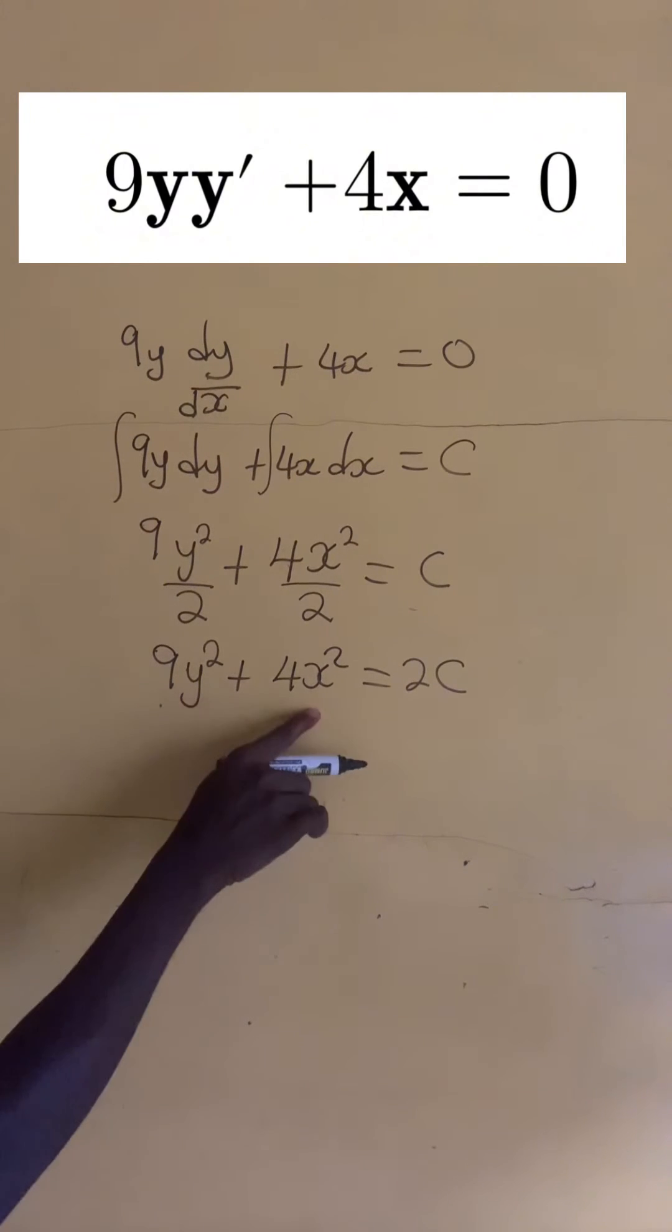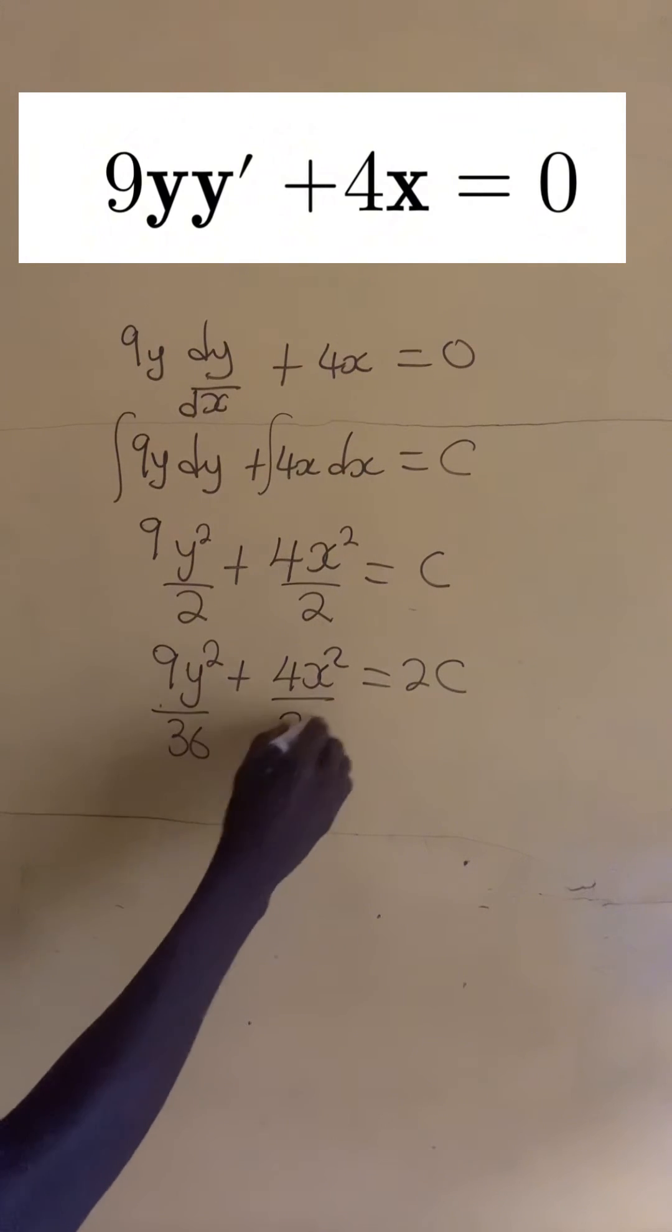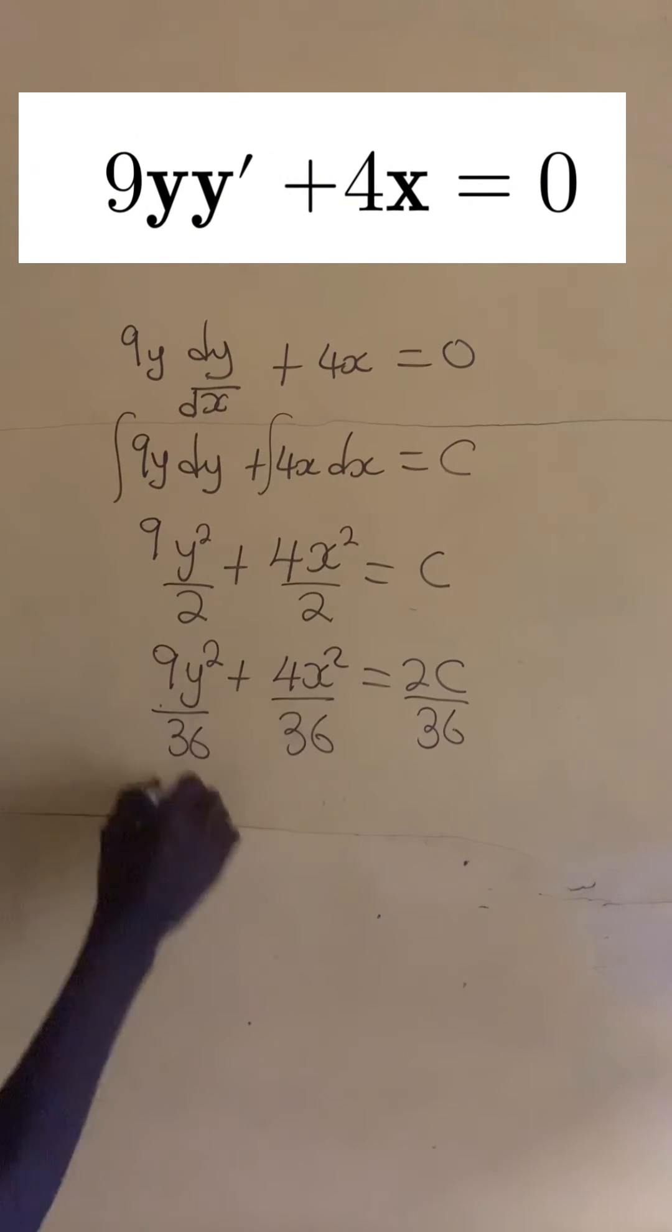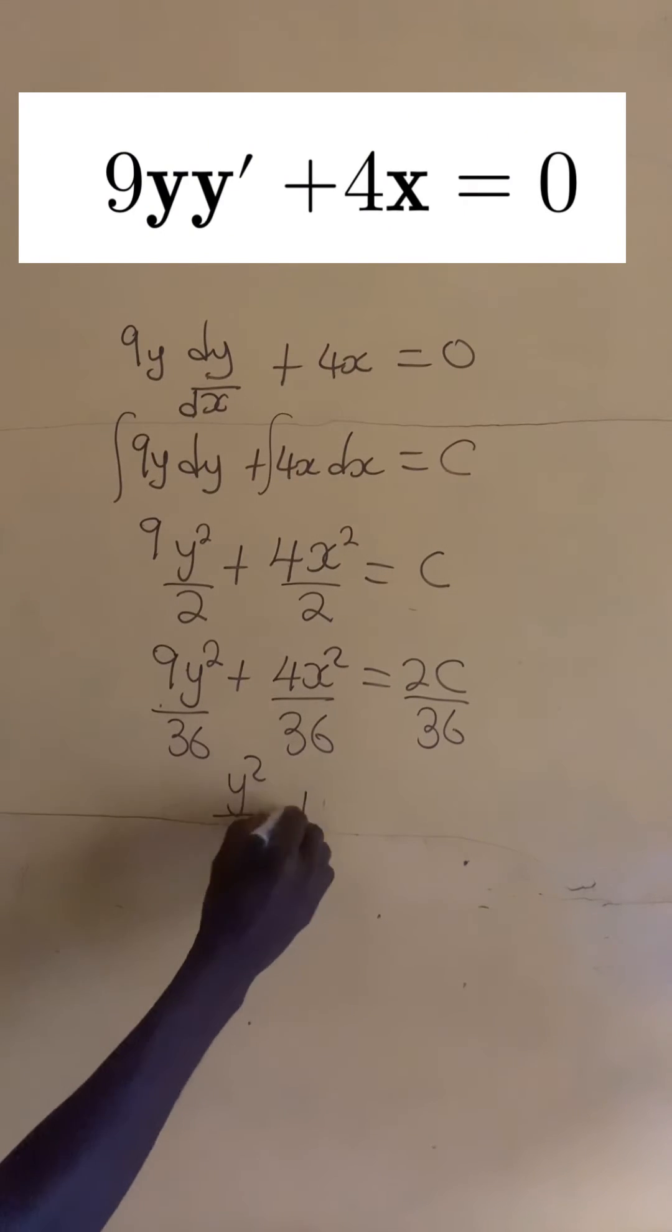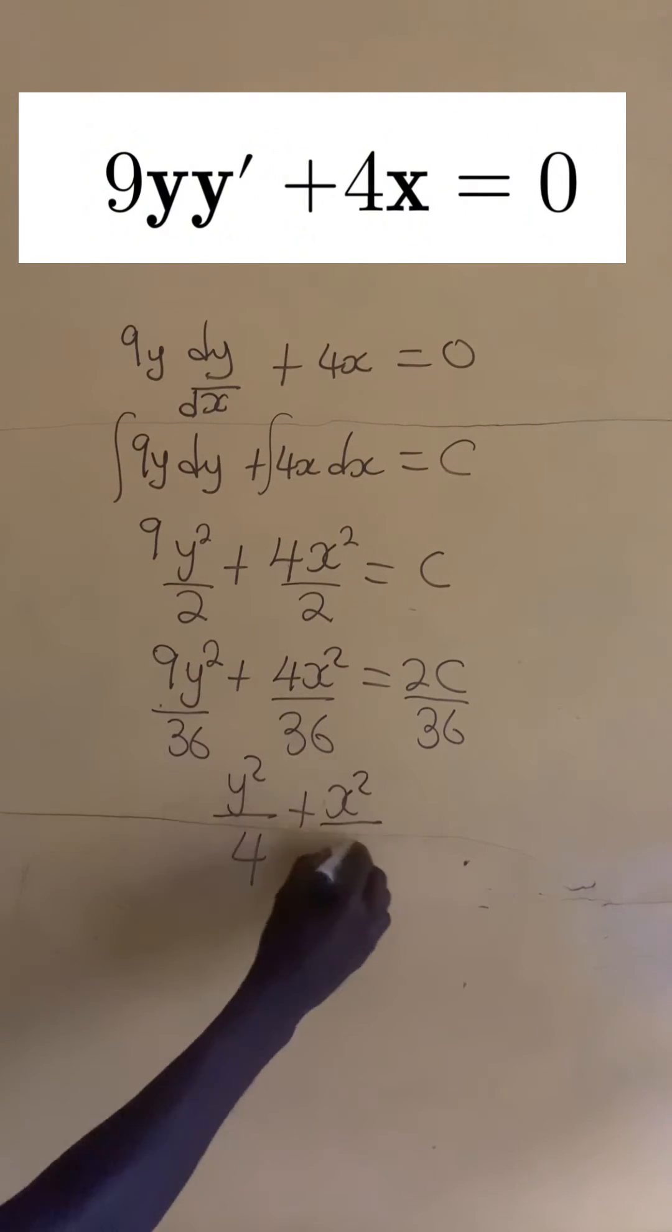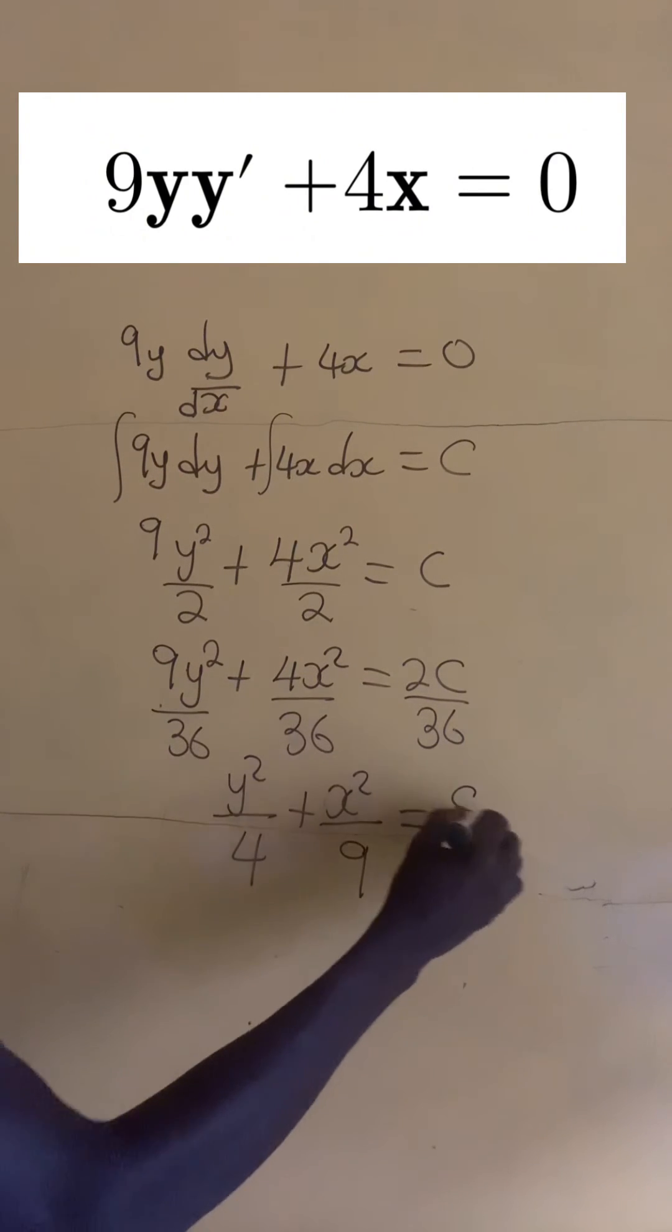Now let us divide by 9 times 4, that is the LCM of 9 and 4, to clear out the 9 and the 4 from the numerator. So here we have y squared divided by 4 plus x squared divided by 9 equals 2c divided by 36, that's c divided by 18.